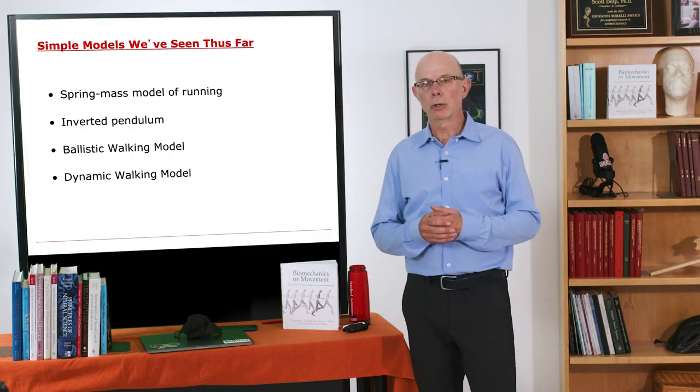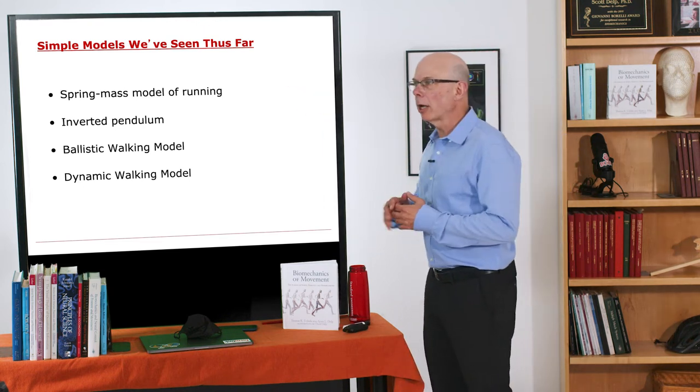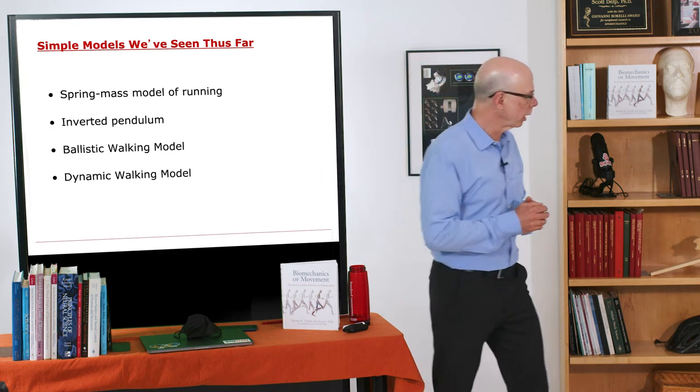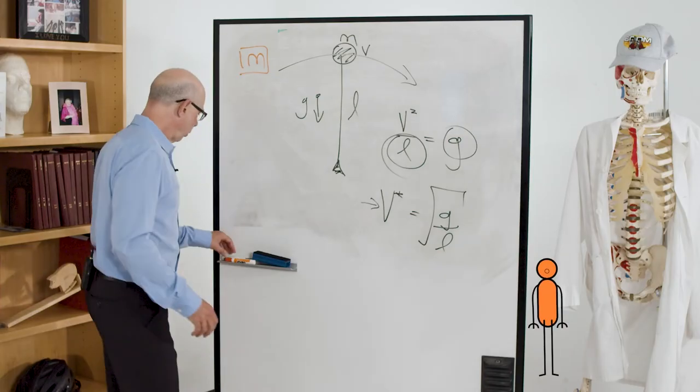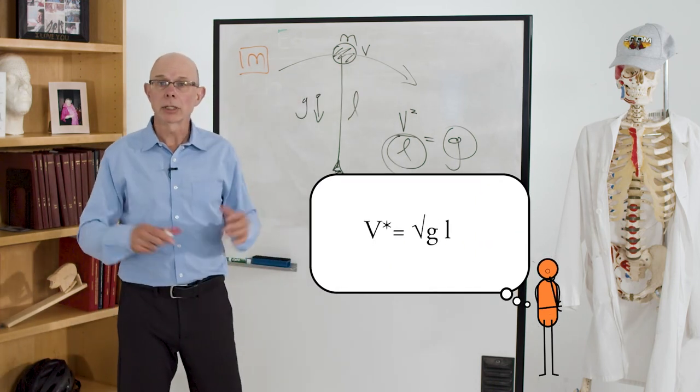So what are the simple models that we've seen so far? We've done a spring mass model of running, an inverted pendulum, ballistic walking model, and dynamic walking model. So what are their relationships? So here's the inverted pendulum model here, very simple.